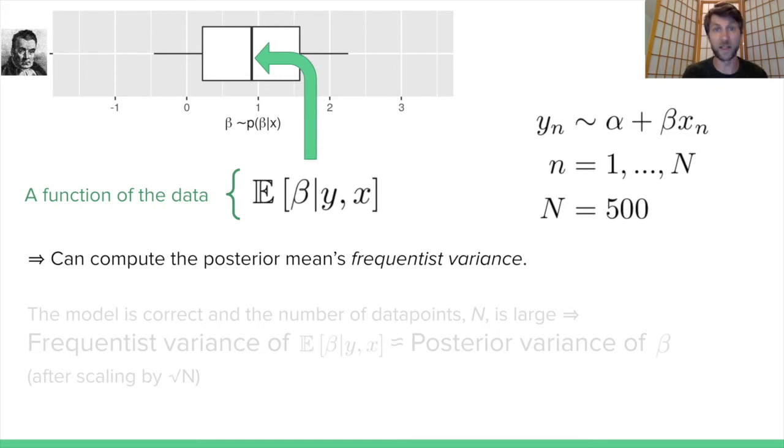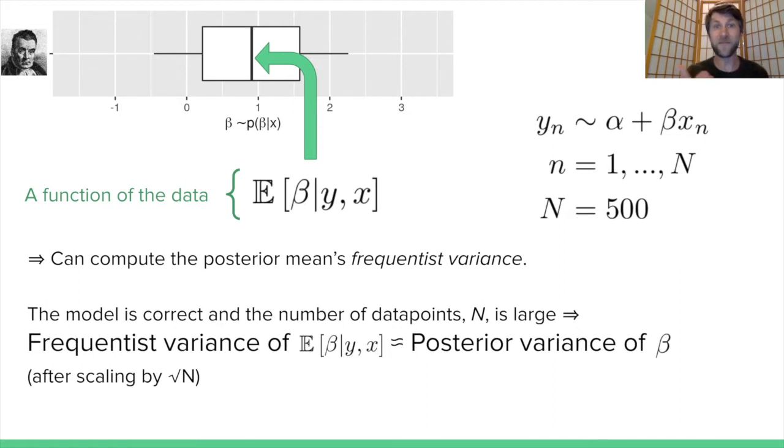Under common regularity conditions satisfied here, if the model is correct and the number of data points n is large, then the frequentist variance of this posterior expectation is approximately equal to the posterior variance of the same quantity, after scaling by the square root of n. These are different random variables. Beta is distributed according to the posterior, and the expectation is a random variable that's a function of the data, but the variances coincide asymptotically if the model is correctly specified. There's a corollary: if n is large and these variances don't coincide, that's an indication of model misspecification. We're going to calculate this frequentist variance and check for model misspecification.